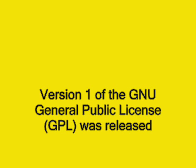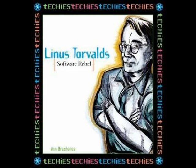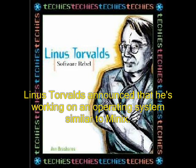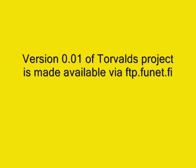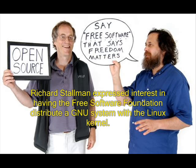February 1989: Version 1 of the GNU General Public License was released. August 1991: Linus Torvalds announced that he's working on an operating system similar to Minix. September 1991: Version 0.01 of Torvalds' project is made available via FTP. October 1991: Richard Stallman expressed interest in having the Free Software Foundation distribute a GNU system with the Linux kernel.